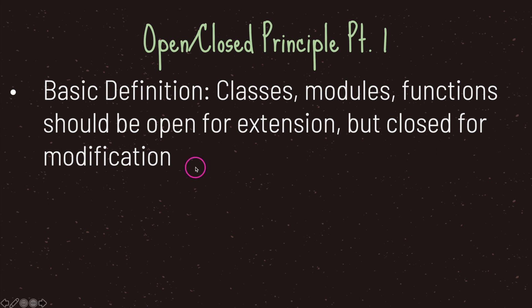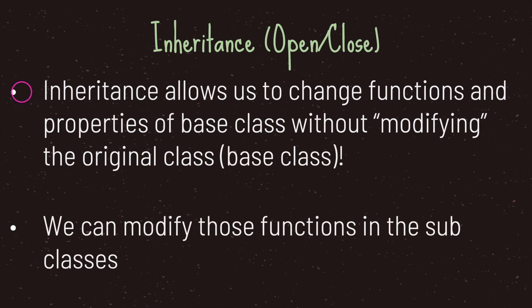By modification of behavior I mean that a class should be open to changing functionality. The closed for modification part is the key part — that means we should not be able to edit the function when we do change the behavior. Because of that, in GDScript the only way to do something like that is through inheritance, or rather the extends keyword. So to apply the open and close principle, we use inheritance.